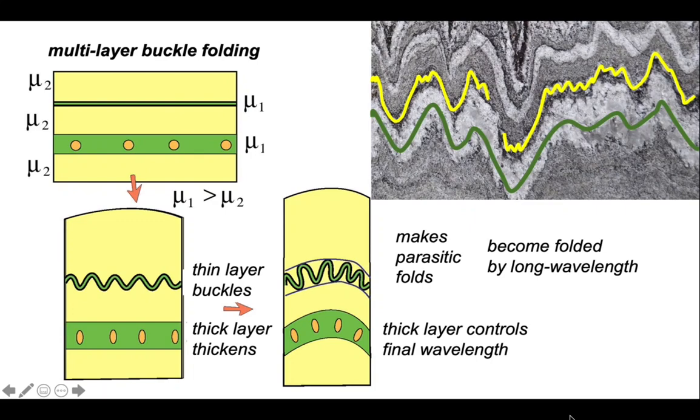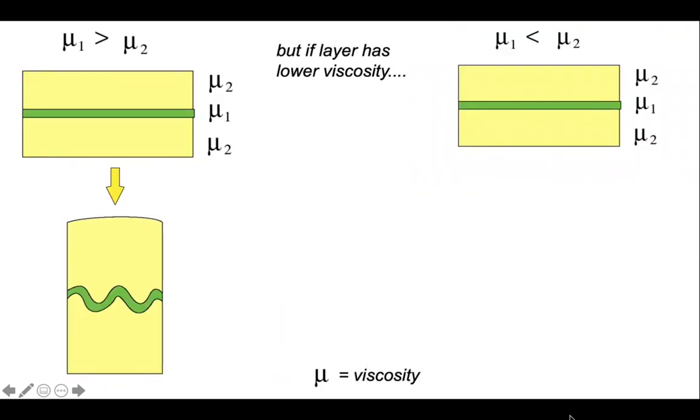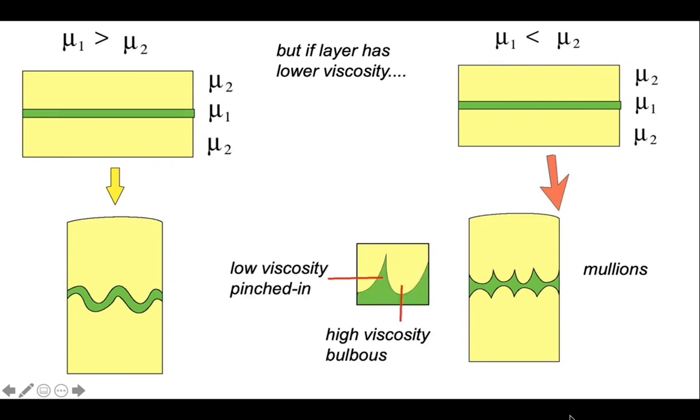But all our experiments so far have considered the situation where the layer we're worried about has got a higher viscosity than the matrix within which it's embedded. But what happens if we reverse that situation and our green layer has a lower viscosity than the matrix? Well, it generates these structures, mullions. If we zoom in on that, we'd have a pinched in fold structure and a more bulbous fold structure. The bulbous structures are cored by the high viscosity material and the pinched in bits by the low viscosity.